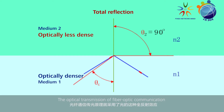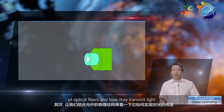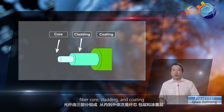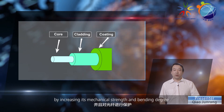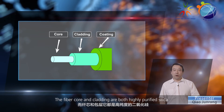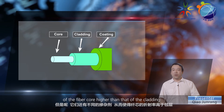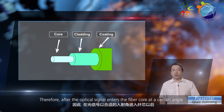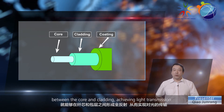The optical transmission of fiber optic communication uses the total reflection effect of light. An optical fiber consists of three parts: fiber core, cladding, and coating. The coating protects the optical fiber by increasing its mechanical strength and bending degree. The fiber core and cladding are both highly purified silica, but different doping agents make the refraction index of the fiber core higher than that of the cladding. Therefore, after the optical signal enters the fiber core at a certain angle, total reflection occurs between the core and cladding, achieving light transmission.